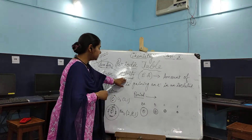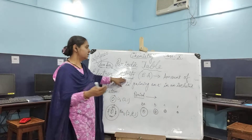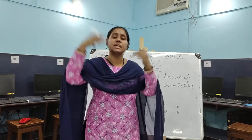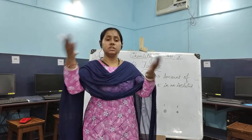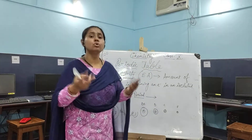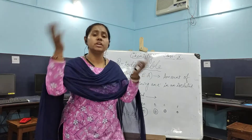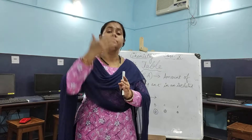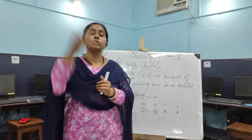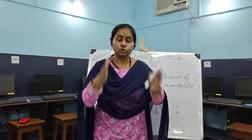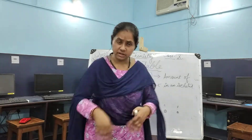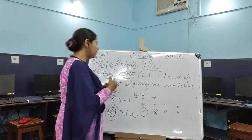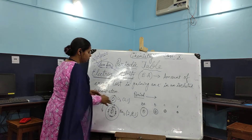Electron affinity is defined as the amount of energy lost in gaining an electron. We need to accept an electron. Those elements which have a deficiency of electrons are going to accept it, but those elements which already have sufficient electrons won't be accepting it.